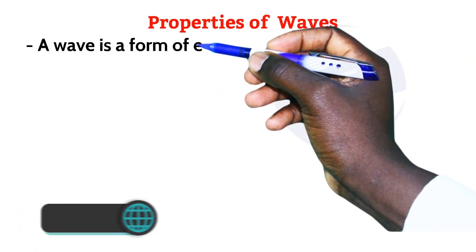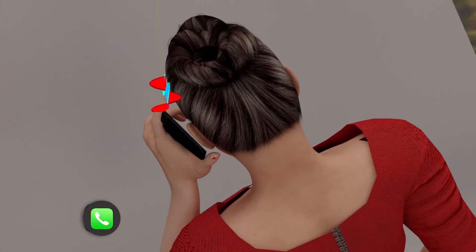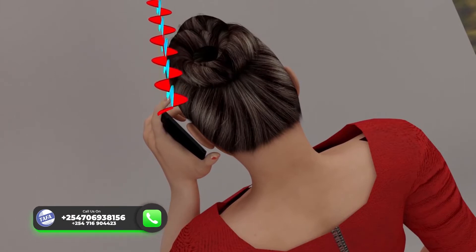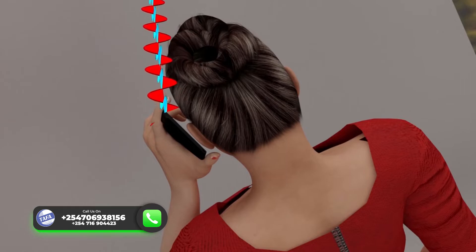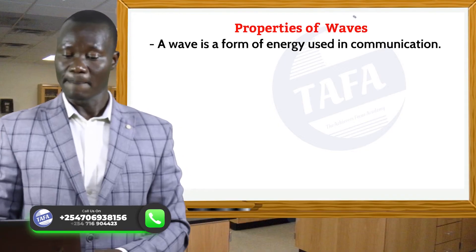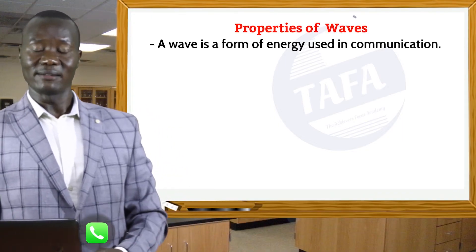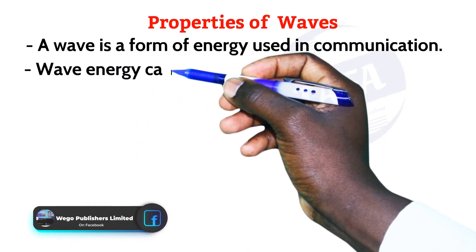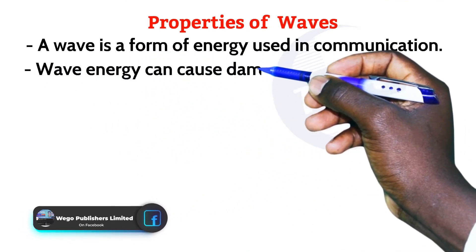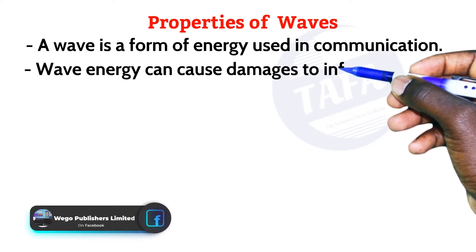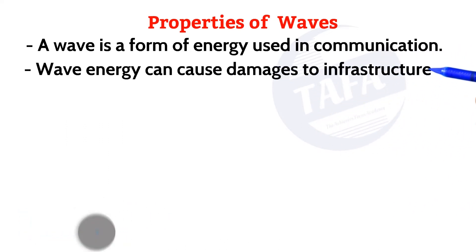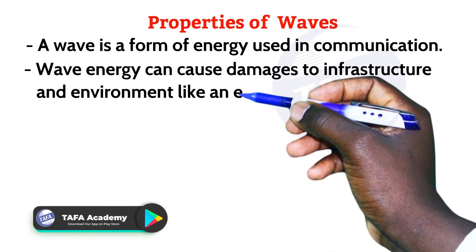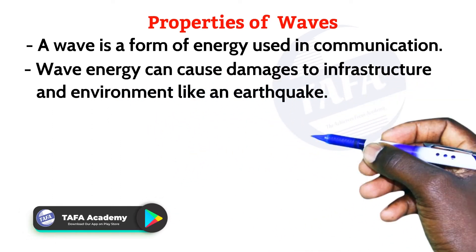These properties aid the wave to be used much more in communication and many other spheres of life. There are various types of waves, and all these waves are transmitting energy. Energy, as studied under work, energy, power, and machines, is the ability to do work.